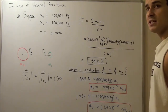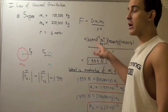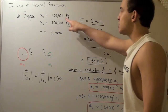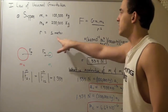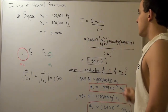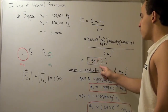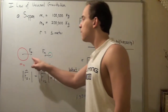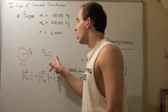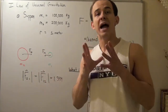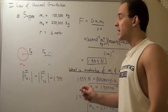G is 6.67 times 10 to negative 11 meters cubed divided by kilograms times seconds squared, multiplied by mass 1, multiplied by mass 2, divided by distance between them squared. Plugging this in, I find that my force is 1.334 newtons. So the force on object 2 due to object 1, and the force on object 1 due to object 2, their magnitude is exactly the same — 1.334 newtons.